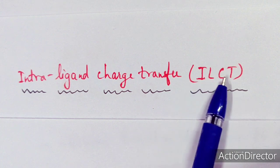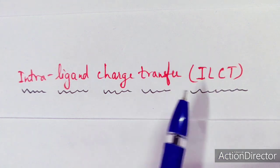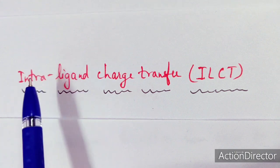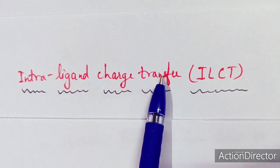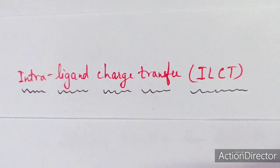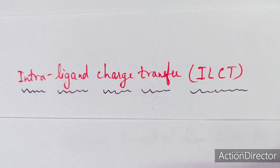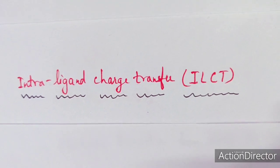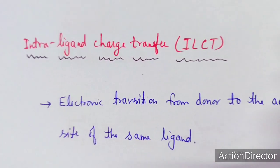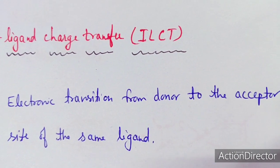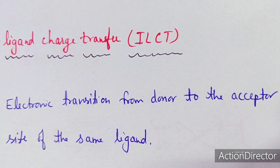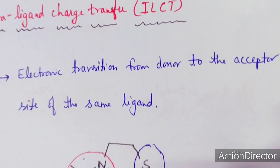Now we consider the intra-ligand charge transfer type, abbreviated ILCT, which falls under the broader LLCT category. In this case, charge transfer occurs within the same ligand — one part of the ligand acts as the donor and another part of the same ligand acts as the acceptor. When electronic transitions occur from the donor to the acceptor site of the same ligand, it is known as intra-ligand charge transfer.